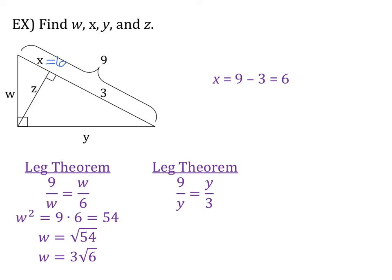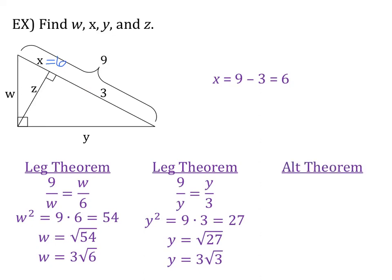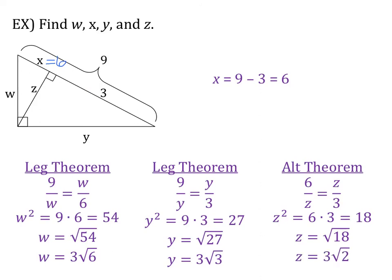Using the leg theorem for Y: 9 over Y equals Y over 3, so Y squared equals 27, meaning Y equals the square root of 27, which simplifies to 3 root 3. For Z, since it is the altitude, we use the altitude theorem: piece of hypotenuse over altitude equals altitude over the second piece of the hypotenuse. So 6 over Z equals Z over 3, giving Z squared equals 18. Therefore Z equals the square root of 18, which simplifies to 3 square roots of 2.